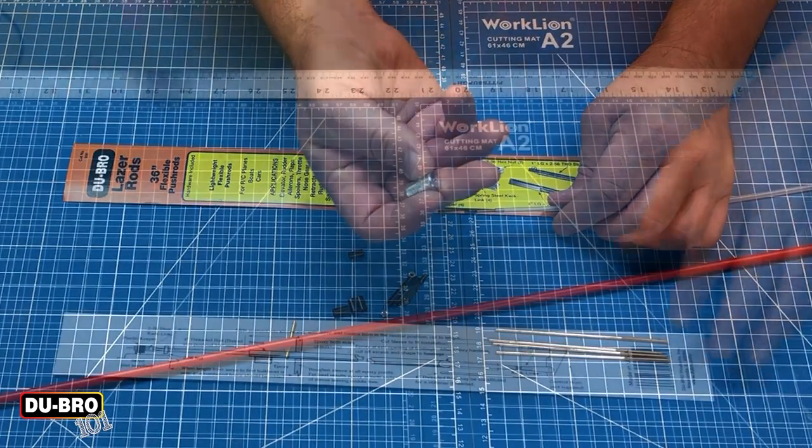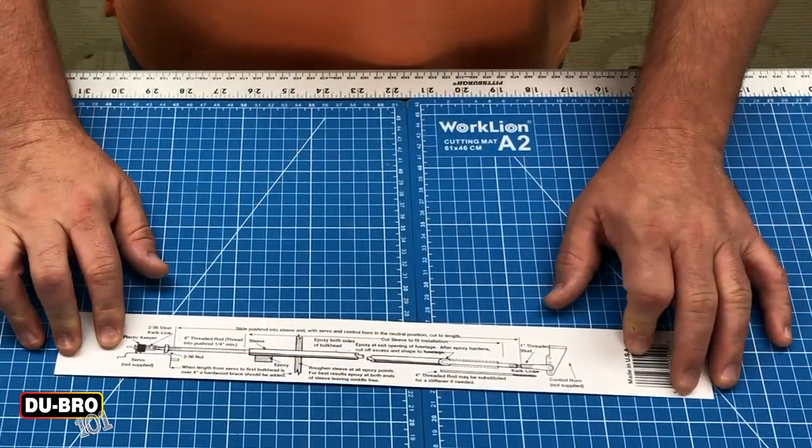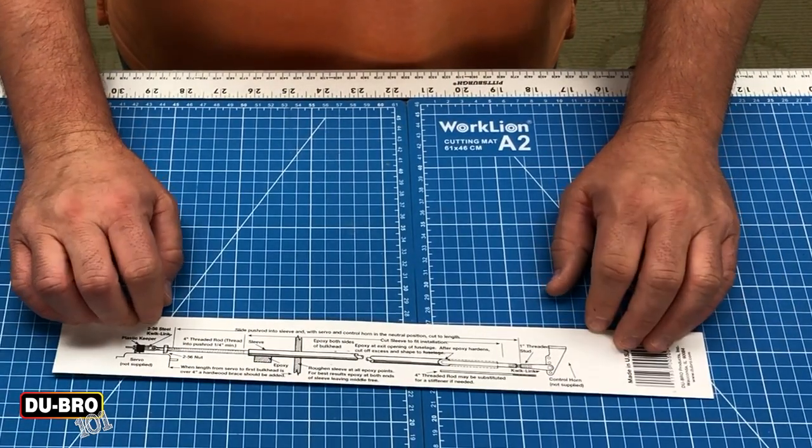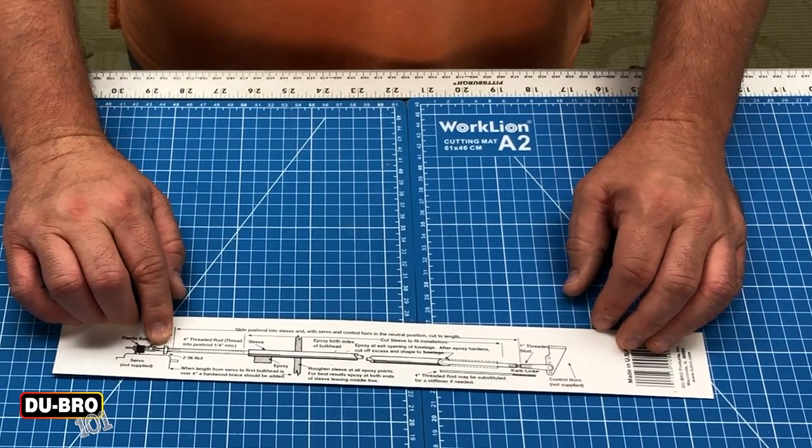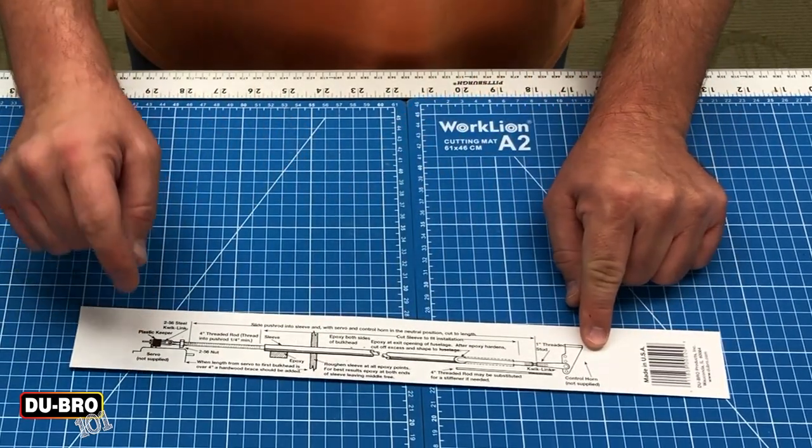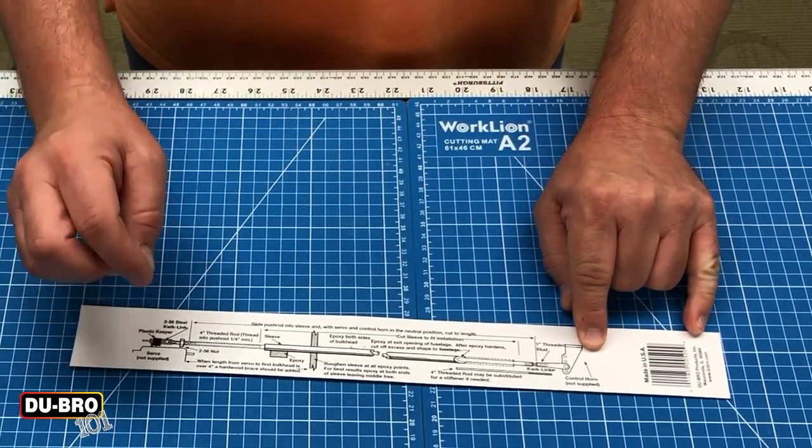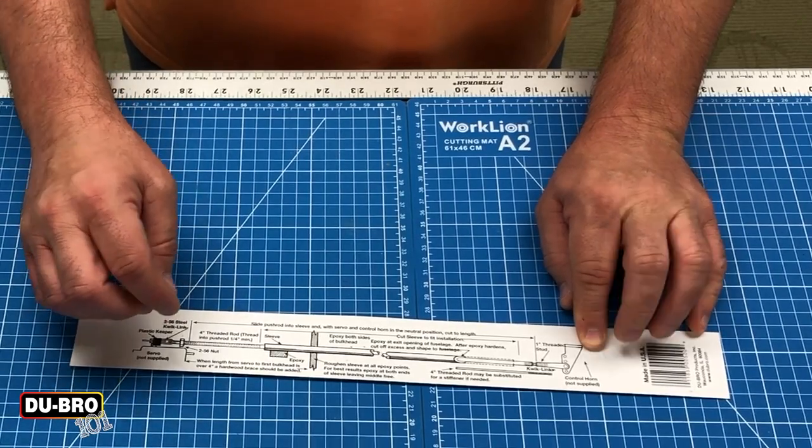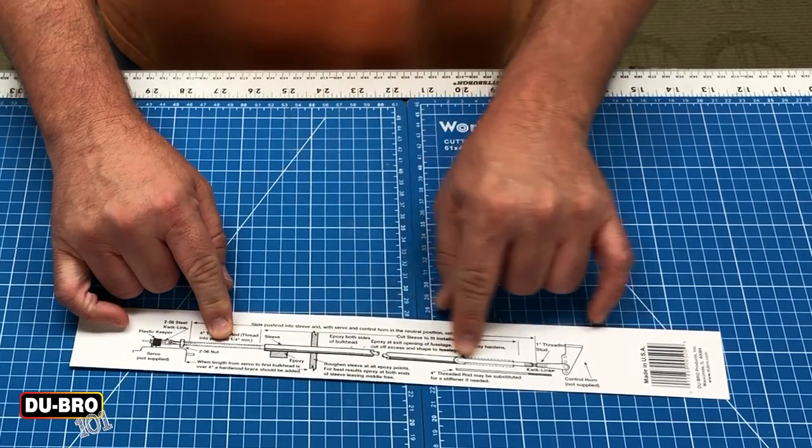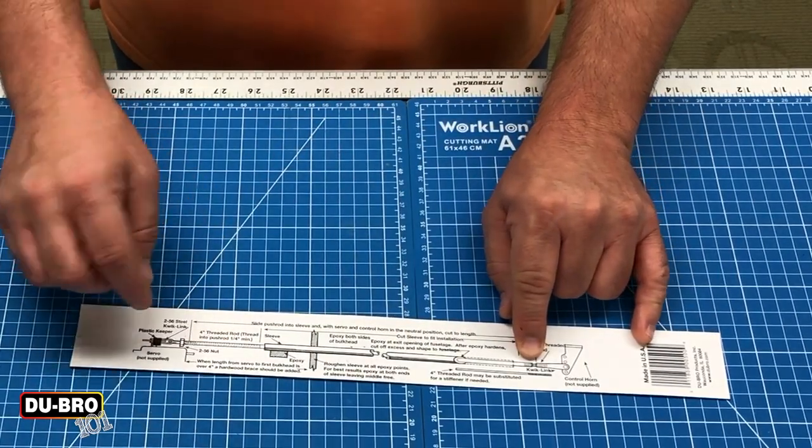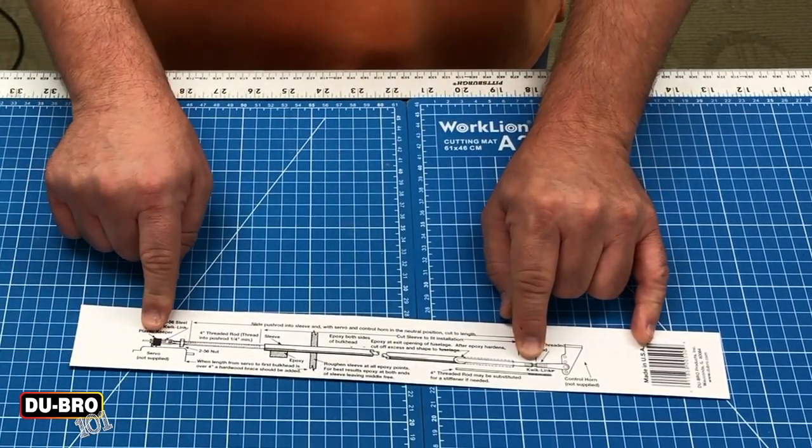Okay, so two final thoughts before we end here. I just want to point out that we only have one 2-56 nut on this entire assembly. The reason for that is you only really need one, because once you lock the nut, this entire control rod is not going to turn because of how it's connected to the servo.